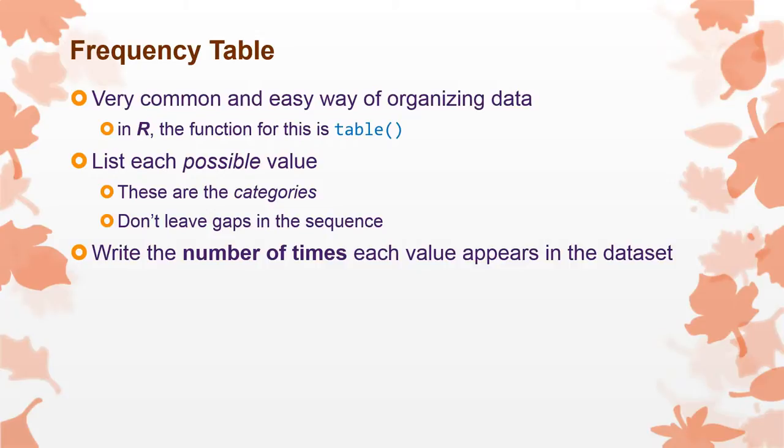And then right beside that you list those in a column usually although you can do it in rows. But right next to each possible value you write the number of times that value showed up in your data set. Even if that number is zero. So for instance if you don't have any sevens but you have sixes and eights still write a seven in the possible values. But then when you get there write zero to show that there were no sevens in your data.